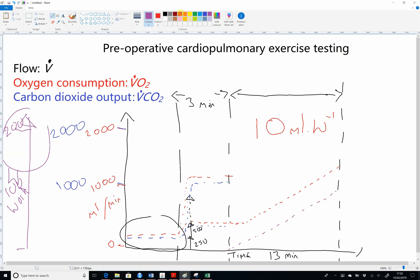The person stops pedaling at T plus 13 minutes. That's 3 minutes where they were freewheeling and then 10 minutes where they were pedaling against a higher increasing resistance. And so the oxygen consumption at the end is going to go down, and eventually it will go back down to resting levels.